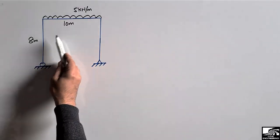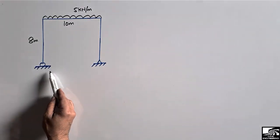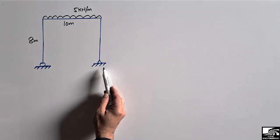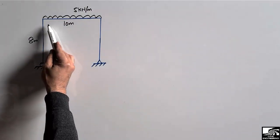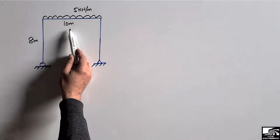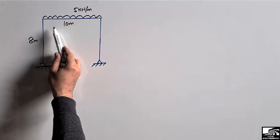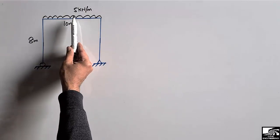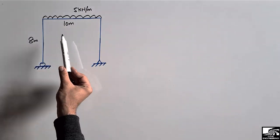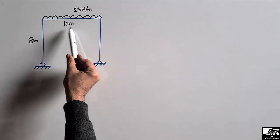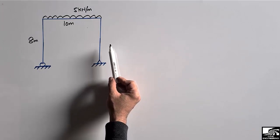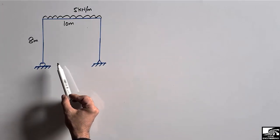This frame consists of one beam and two columns. It is supported with a roller support and a hinge support. The two columns have the same length of 8 meters and the beam has a length of 10 meters. The beam is loaded with a uniformly distributed load of 5 kilonewton per meter, while there is no load acting on the columns.